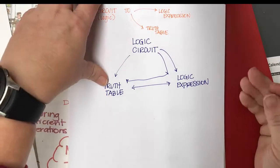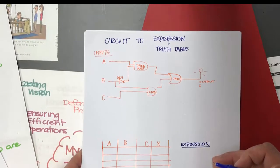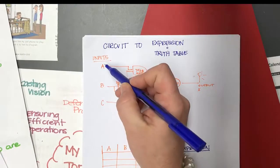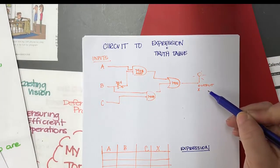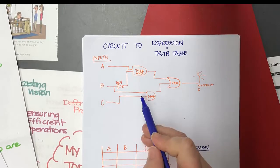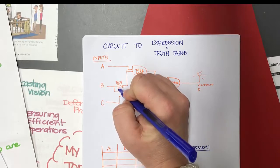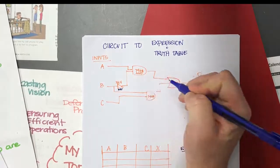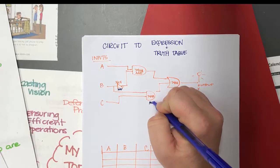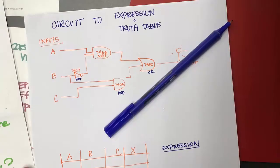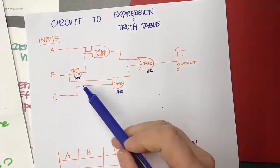Here you can see the expression. These are my inputs A — just imagine these are switches A, B, and C — and here's my output, which I'm calling X. I've labeled these like TTL gates: this is a NOT gate, this is an AND gate, this is another AND gate, and this is an OR gate.